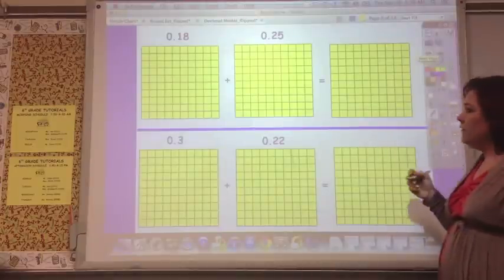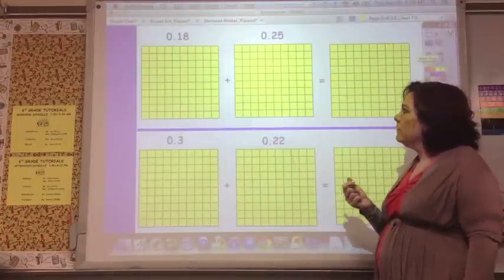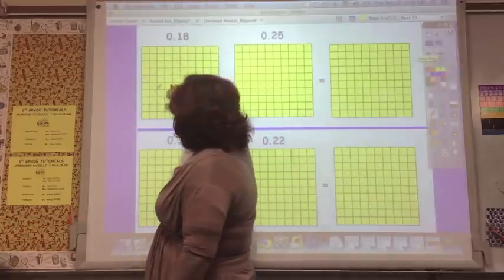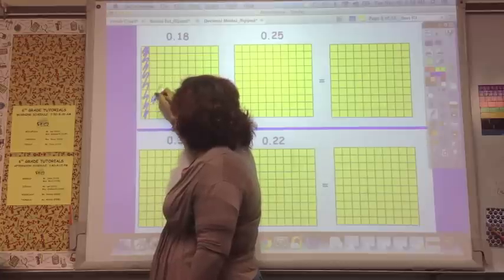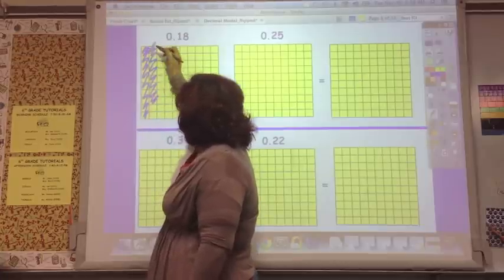Now if you're doing hundredths, you're going to show eighteen on this. So this is ten, and then this is another eight. So that's eighteen.